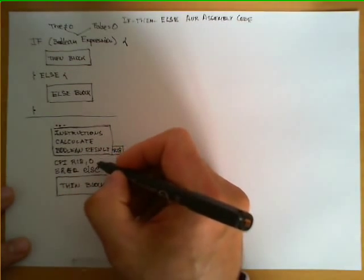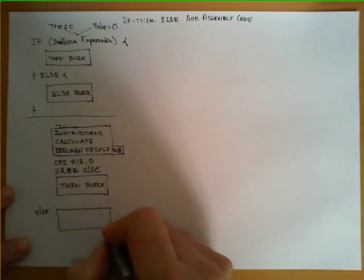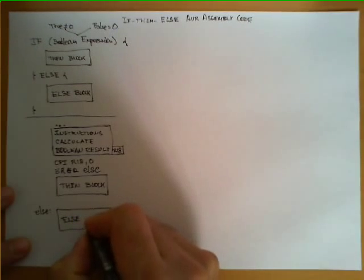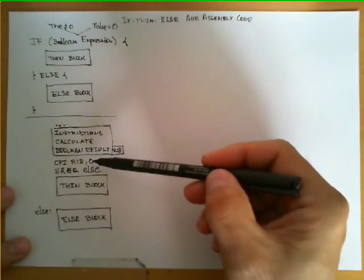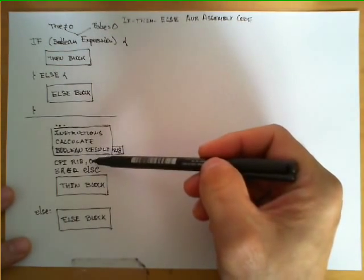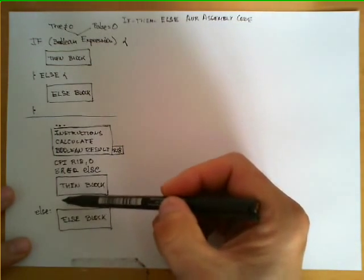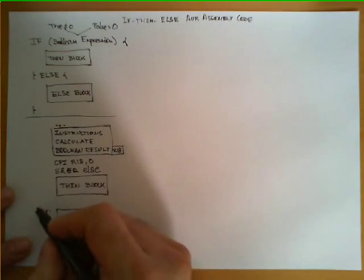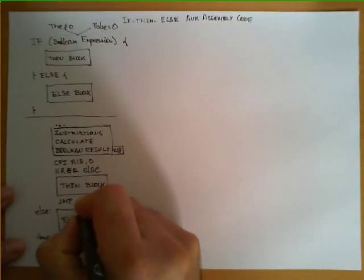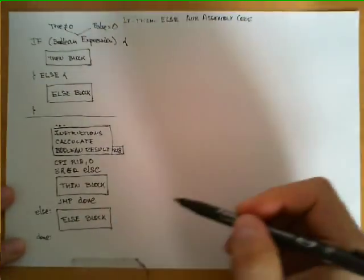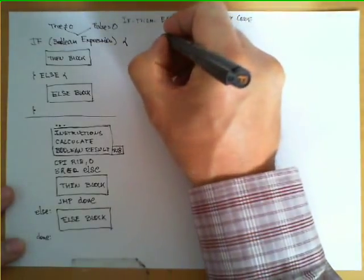If the result is equal to 0 we jump to a location in the code marked with a label, which contains the instructions implementing the else-block. There is one additional detail: after executing the then-block, we cannot let the microprocessor proceed into the else-block, so we need an unconditional jump. We add a label called done and an unconditional jump to that location. With this structure we have replicated in assembly code the high-level if-then-else statement.